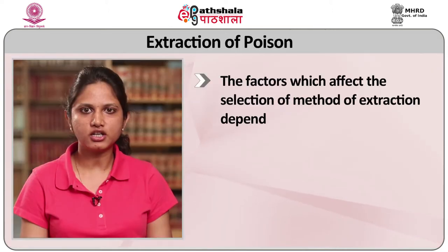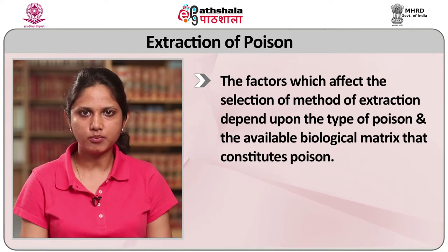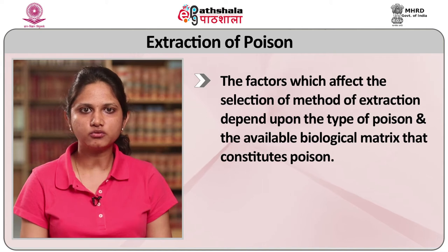The factors which affect the selection of extraction methods depend on the type of poison and the available biological matrices. There are various types of poisons which have already been discussed in an earlier module, such as non-volatile organic poisons, volatile organic poisons, metallic poisons, anions, vegetable poisons, etc. Depending on the type of poison to be extracted from the given matrix, there are specific extraction procedures for the specific class of compound.